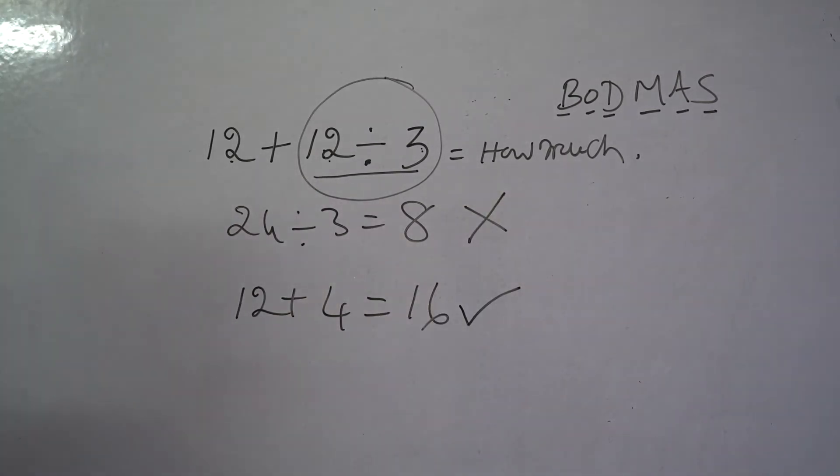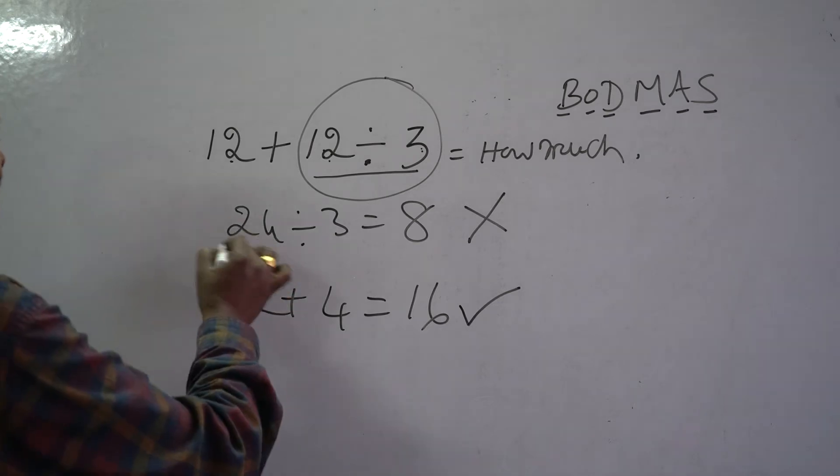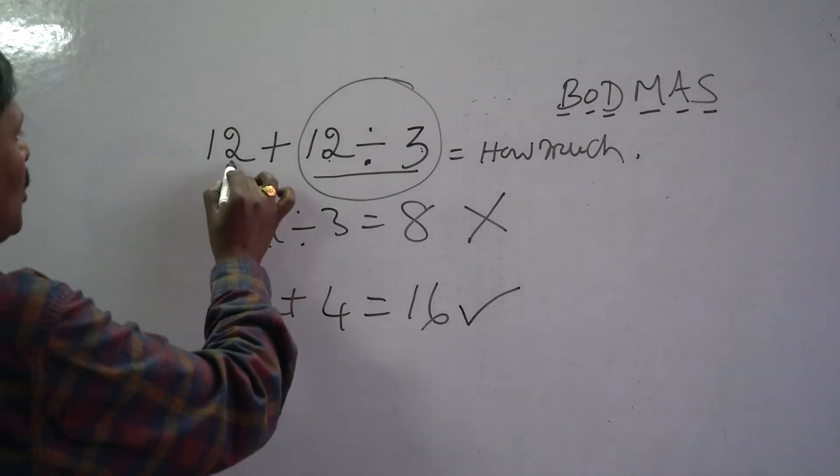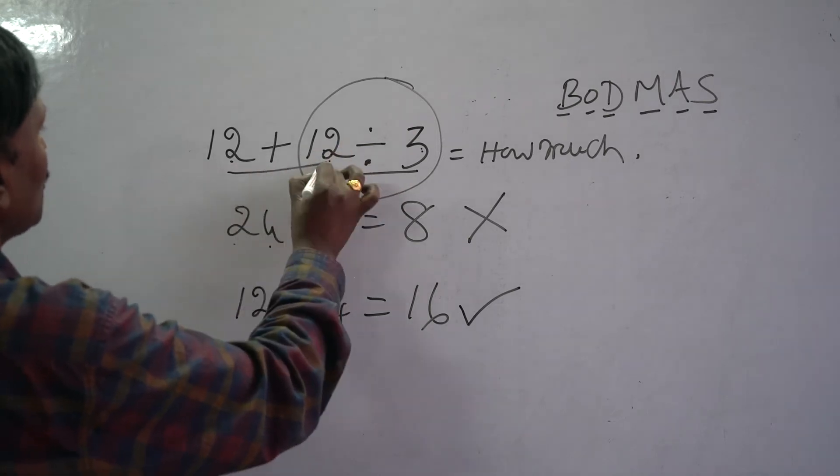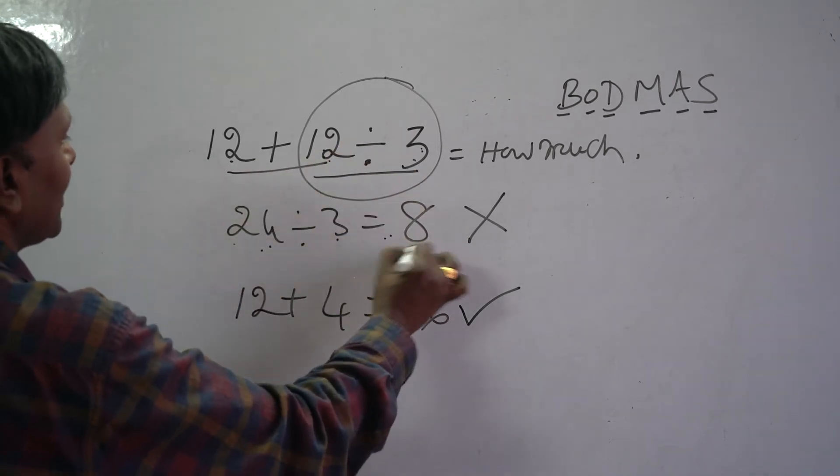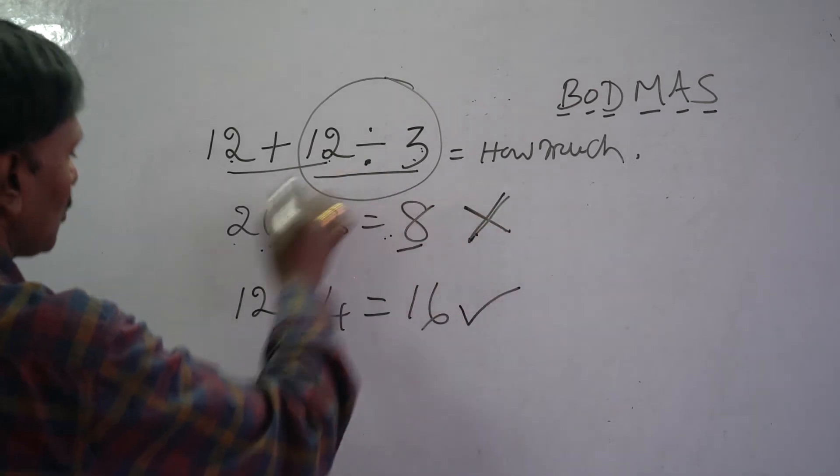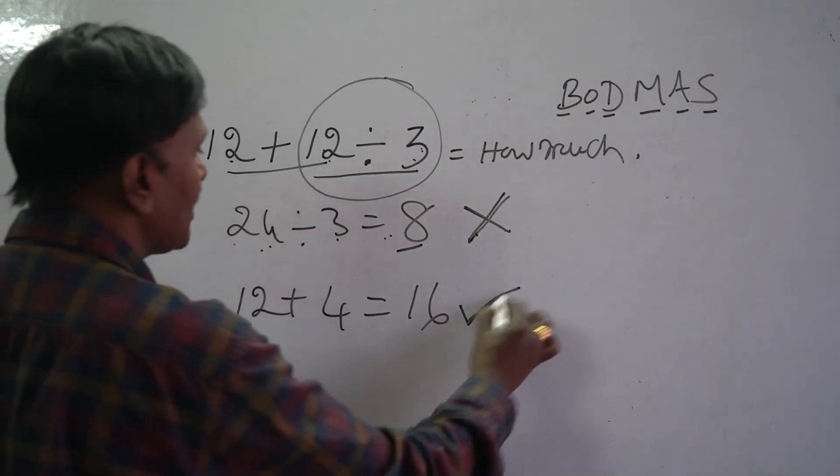Generally, many people do like this. This is 12 plus 12, 24 divided by 3. This is how much? 8. So, this is wrong answer. The correct one is 16.